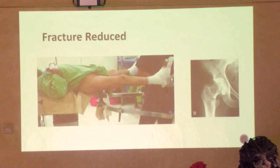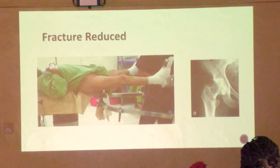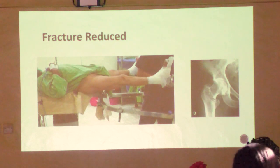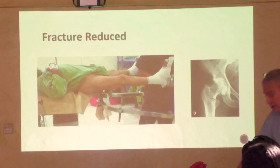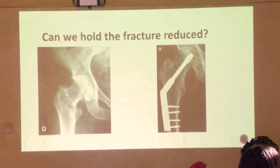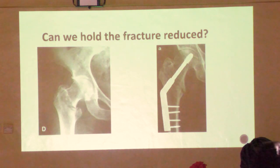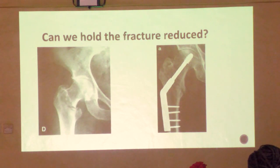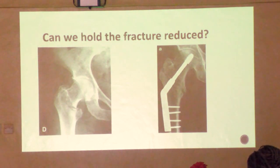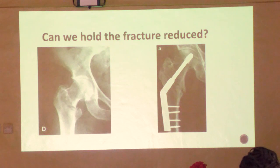We could just leave the patient on traction for six weeks, but that's totally impractical. We either need to do an operation to fix it or think of ways of holding that position while still nursing the patient. In theatre, we fix it. In this case the patient had a dynamic hip screw, which holds the fracture still while it heals but even allows the patient to walk the next day - a miracle of modern science.